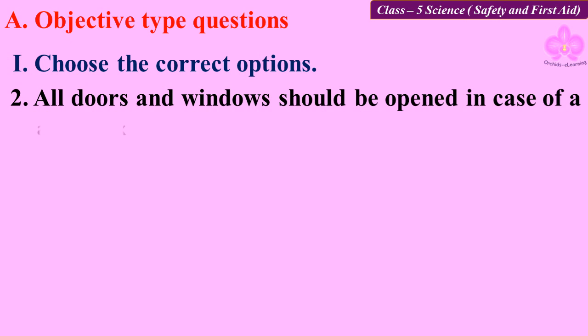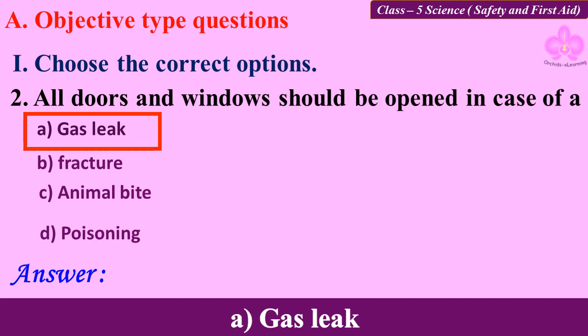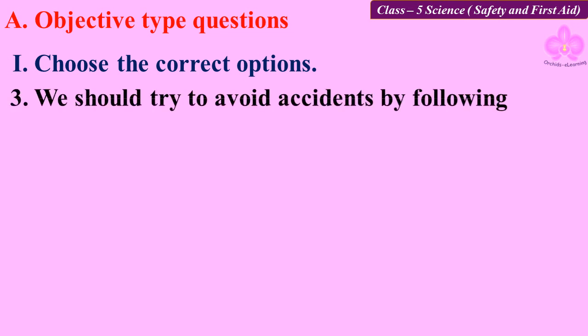Second question: All doors and windows should be opened in case of — option A: gas leak, B: fracture, C: animal bite, D: poisoning. Answer: A, gas leak.